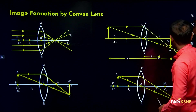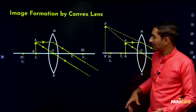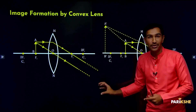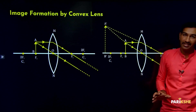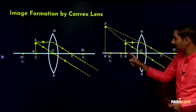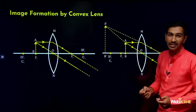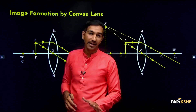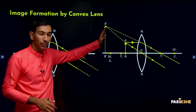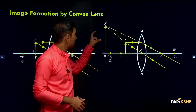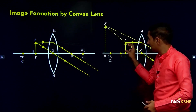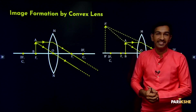Fifth and sixth cases: when the object is at F1, the image formed is at infinity — inverted and real. When the object is between F1 and the optic center O, the image forms on the same side as the object, nature is virtual and erect, and size is enlarged — the image is much larger than the original object.